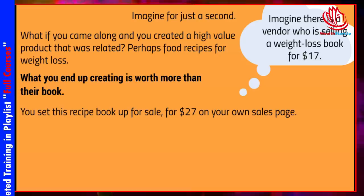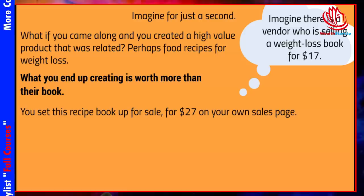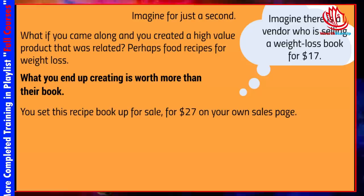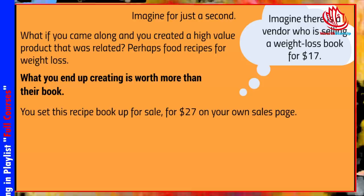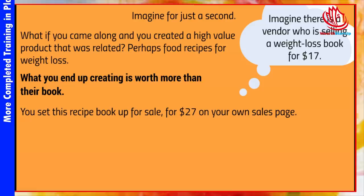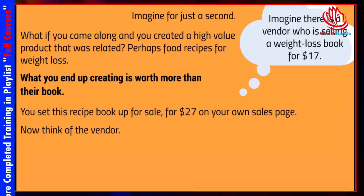You want to make sure your high-value product is priced at double or a little more than what they are selling. The reason is it's going to get the vendor to more likely say yes. It's got to be realistic — if you're offering something of low value and just bumping up the price, that's not going to work. Yes, it does take a little more time to go through this process, but it will be well worth it. If you can find 10 or 20 or 30 vendors selling a weight loss book with nothing related to food, approach them and get a few to say yes.